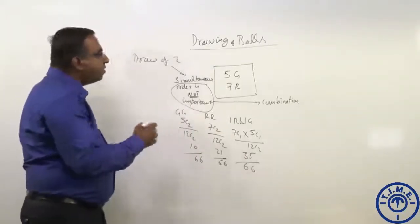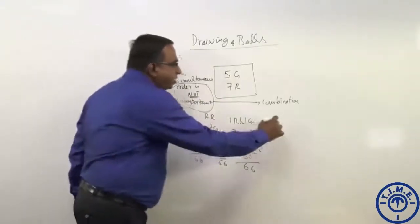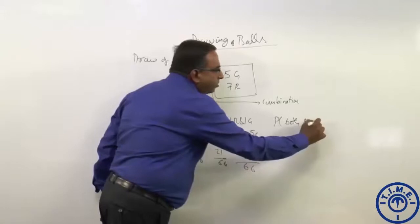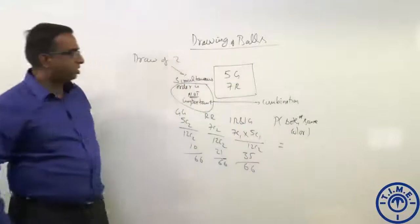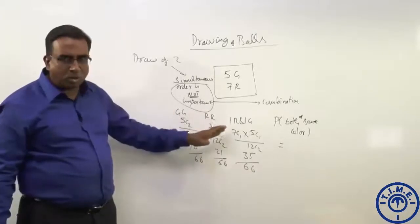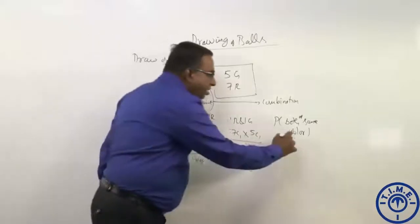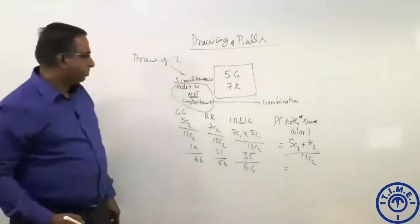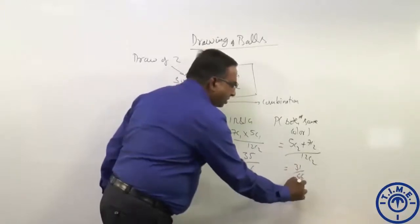If you want to answer a question like: what is the probability of drawing balls of the same color? Same color means either both could be green or both could be red, so we add them. It will be 5C2 plus 7C2 by 12C2, which gives 31 by 66.